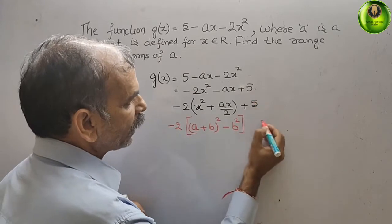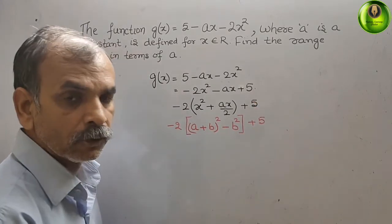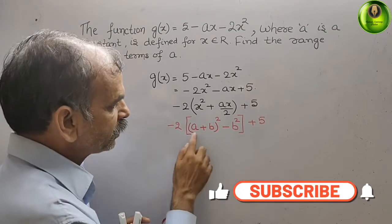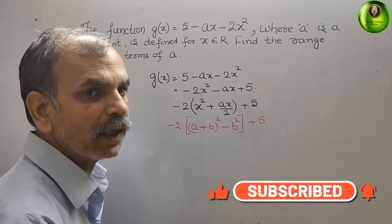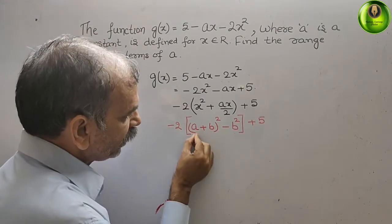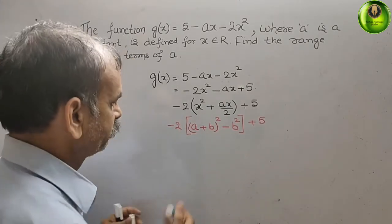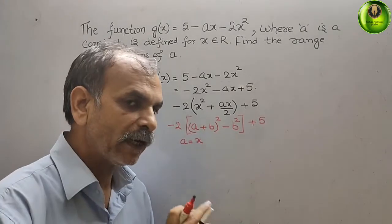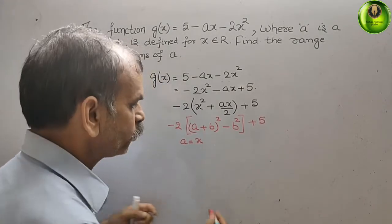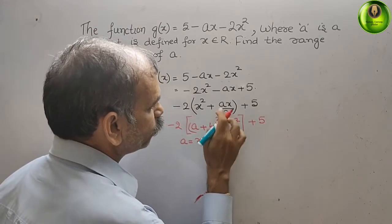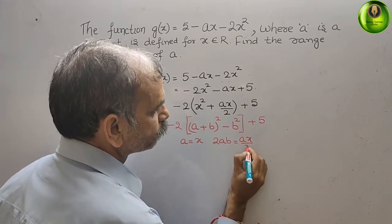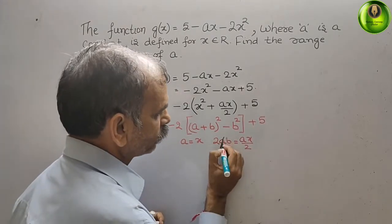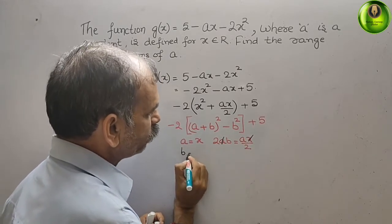We write minus 2 outside the bracket and plus φ. Now compare: (a + b)² = a² + b² + 2ab. We get a = x since a² = x². Then 2ab equals ax/2, and since a is x, b comes out to be a/4.